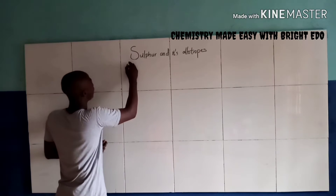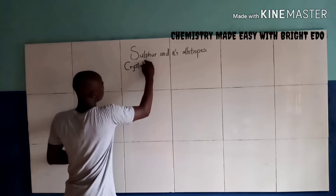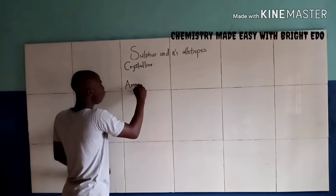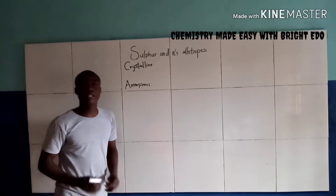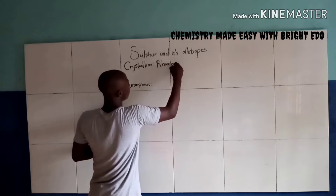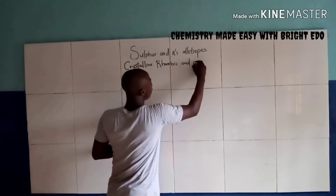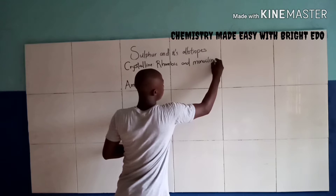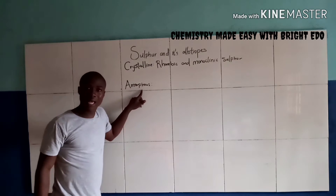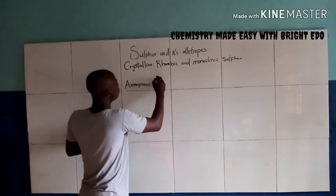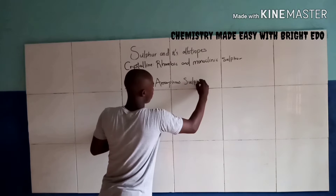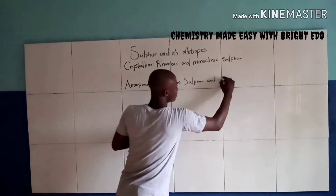Now let's talk about the crystalline Allotrope of Sulfur. It is divided into Rhombic and Monoclinic Sulfur. While the Amorphous Allotrope of Sulfur is divided into Amorphous Sulfur and Plastic Sulfur.